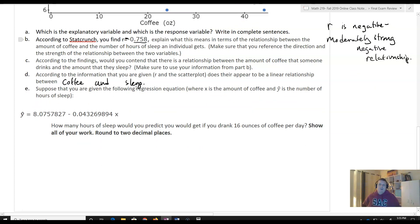Then thirdly, suppose that you're given the following regression equation. Remember, a regression equation is used for prediction. So what we're going to do is we're going to try and predict how much somebody would sleep based upon the number of ounces that they drink of coffee. So we've got y hat. We've got my response variable, that's sleep, and X, the number of ounces of coffee. And so we want to know how many hours of sleep would you predict you would get if you drank 16 ounces of coffee per day.